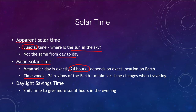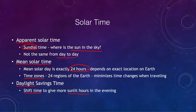Daylight saving time is not an astronomical event. It is only done to shift the time — it doesn't change anything astronomical. It is simply a civil change to give more sunlit hours in the evening. Instead of the sun rising and setting earlier in summer, the clocks are shifted so the sun rises a little later and sets a little later, pushing those daylight hours into the evening.